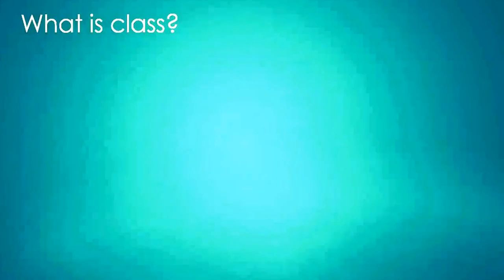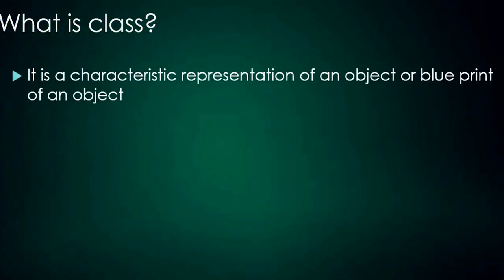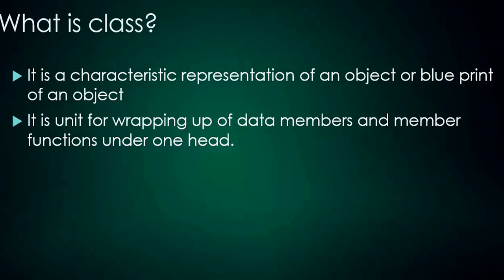A class is a characteristic representation of an object, or we say it is a blueprint of an object. An object-oriented program is one which represents the characteristic of an object considered to be a class, or one which is a blueprint of a given object. It can also be defined as a unit for wrapping up data members and member functions under one head — that head is going to be a class.